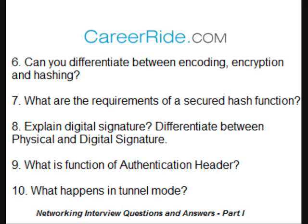Can you differentiate between encoding, encryption, and hashing? Encoding is used to protect the integrity of data as it crosses through a communication network. It is primarily an insecure function because it is easily reversible. Encryption is designed for confidentiality and data integrity and is reversible only if you have the appropriate key. With hashing, the operation is one-way — that is, non-reversible. It takes an input and returns a fixed-size string called the hash value.